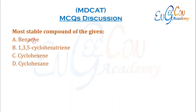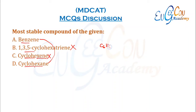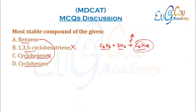Most stable compound among benzene, 1,3,5-cyclohexatriene, cyclohexane, and cyclohexene. Cyclohexene has one double bond, so it is less stable than cyclohexane. 1,3,5-cyclohexatriene has three double bonds, so it is also less stable. Comparing benzene and cyclohexane: when hydrogen is added to benzene to form cyclohexane, energy is released, meaning cyclohexane has less energy. Therefore, cyclohexane is the most stable compound.